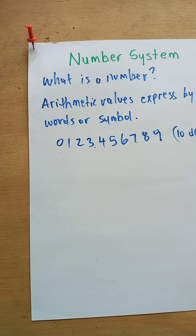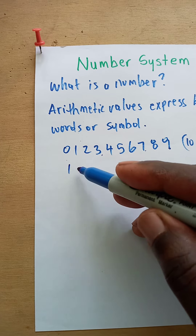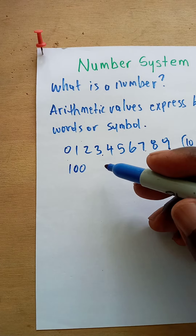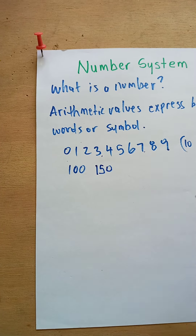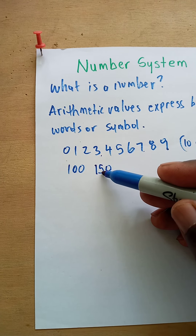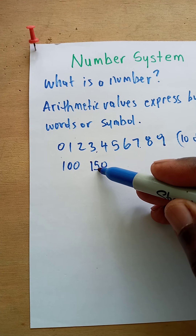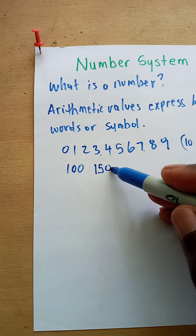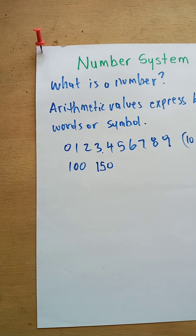From these ten digits we can make up any number. For example, if I want to make a hundred, I have a one and repeat zero. If I want to write one fifty, I put a one, a five, and a zero — zero position, ones position, tens position, hundreds position. So I have no ones, five tens, and one hundred — that makes one fifty.